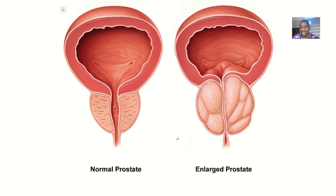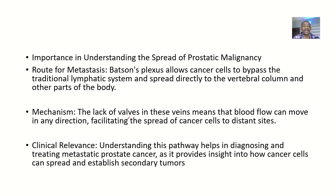You can see how prostate cancer presents — most patients with prostate cancer have difficulty passing urine because the prostatic urethra is compressed. Before they can urinate, they have to strain a lot. Understanding the importance of this venous plexus helps in understanding the spread of prostatic malignancy.